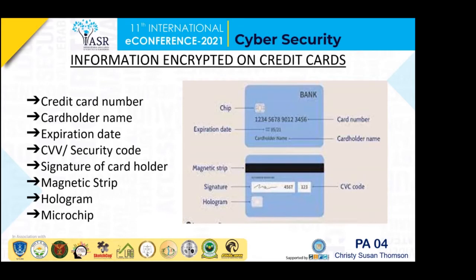The cardholder name should match any government-issued ID. Next is the expiration date, which is also displayed on the front of the card. Then there is the CVV, or Card Verification Value — a three-digit number found on the back side of the credit card near the signature box. For American Express cards, the CVV has four digits and is printed on the front side of the card.